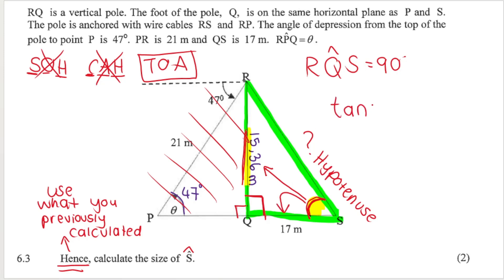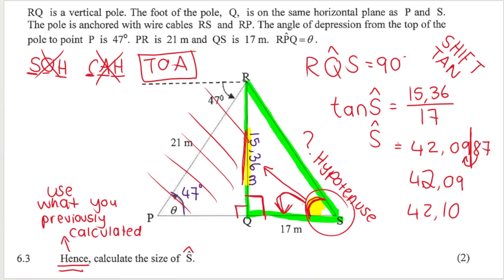So it's tan of the angle S is equal to what is opposite S? 15.36. What is adjacent to S? Adjacent means next to, 17. When you are looking for an angle you need to press shift tan on your calculator. So you press shift tan and then type in your fraction and I get that angle S is equal to 42. Remember two decimal places. My calculator says 42.0987. If I chop it off at two decimal places, this nine must go one up. So it's 42.09. It must go up so it's going to be 42.10 and that's going to be in degrees.